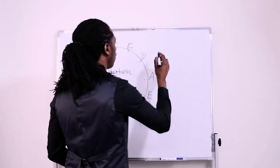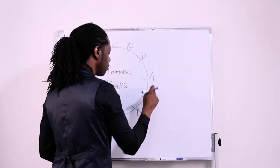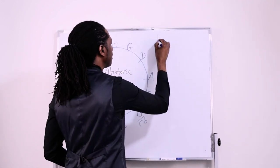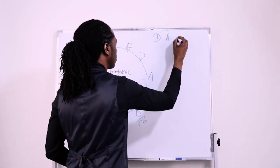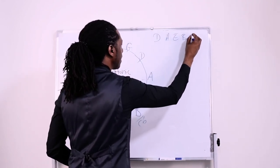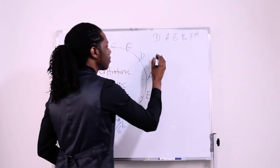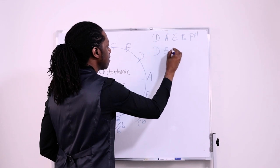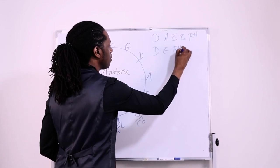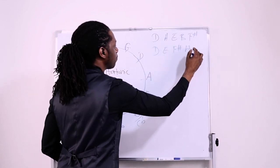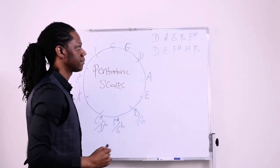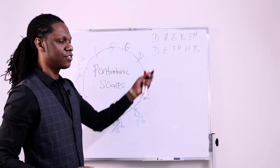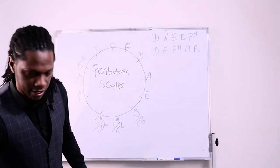All right? It must be the same for D major. One, two, three, four, five. So we have D, A, E, B, and F sharp. Okay? So now we have, to order it, we have D, we have E, we have F sharp, we have A, and we have B. Okay? That is your D major pentatonic.